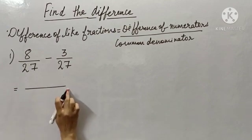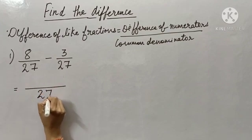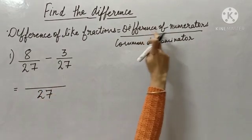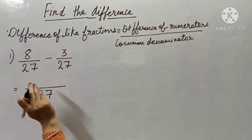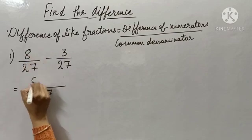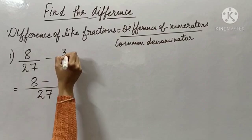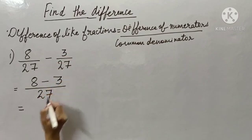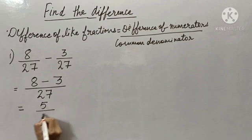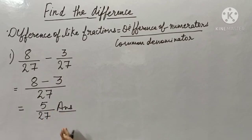Fraction bar I will draw. Then what is my common denominator? 27. Then I have to find the difference of numerators, that is I will be subtracting my numerators. So here my numerator is 8, sign of subtraction minus, here my numerator is 3.